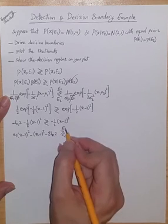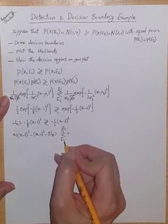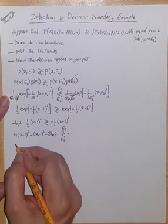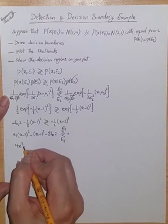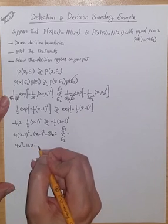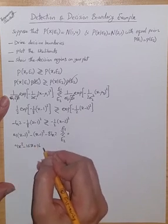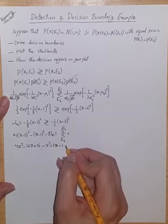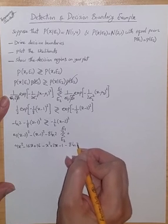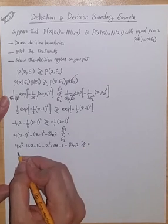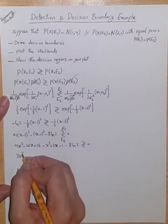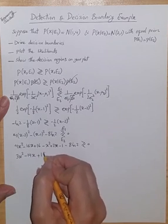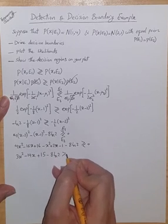If the result is greater than 0, then the decision is e2. Simplifying this further, we get 4x² minus 16x plus 16. That's for the first component. This becomes minus x² plus 2x minus 1 minus 8 ln 2 compared with 0. Further simplifying, 3x² minus 14x plus 15 minus 8 ln 2 compared with 0.